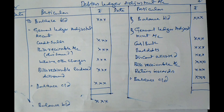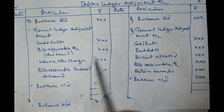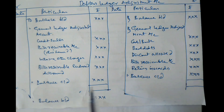The Debtors Ledger Adjustment Account is similar to the account prepared in the single entry system. The only difference is that all entries are made by passing or preparing the General Ledger Adjustment Account. Other than this, all entries are almost similar. In this way, this account is prepared.